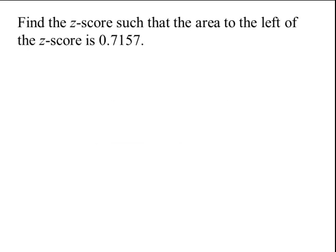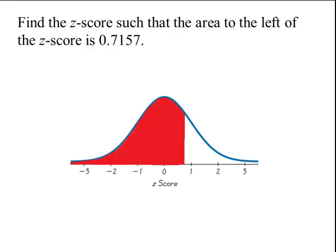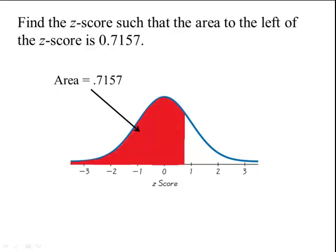Lesson objective number 2. We'll find the z-score such that the area to the left of the z-score is 0.7157. In this problem we are given area and we're trying to find the z-score. Our first step is to draw a picture. From the picture we see that the z-score has to be a positive number, because we're looking at area to the left and this number is larger than 0.5. The area to the left of 0 for a standard normal curve is 0.5, so the z must be positive.